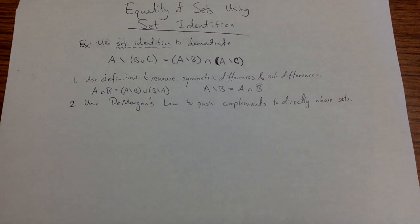The second step is I'm going to use DeMorgan's Law to push my complements to be directly above sets. This means that instead of having a complement that covers a union or an intersection, I'm going to push it down a level, flip that union or intersection, and then have my complements one level down.